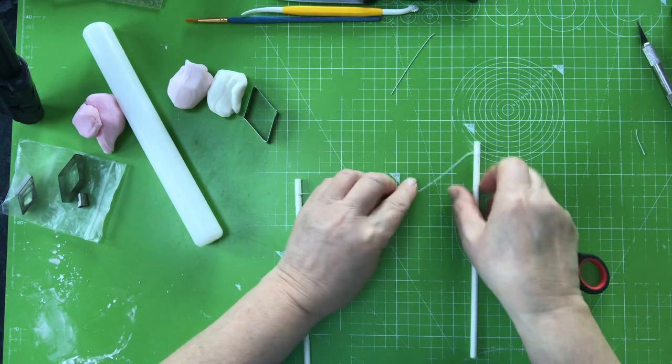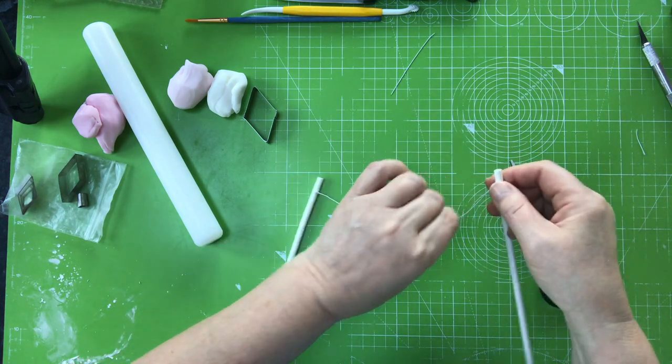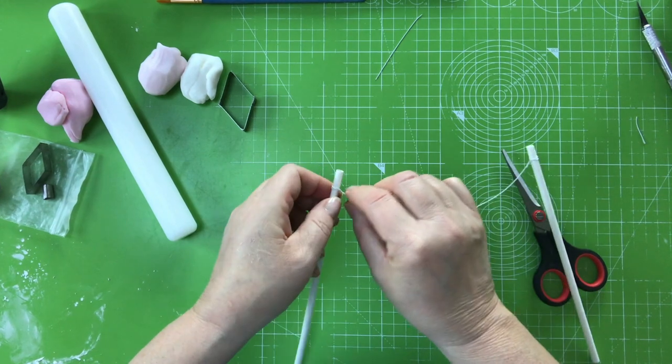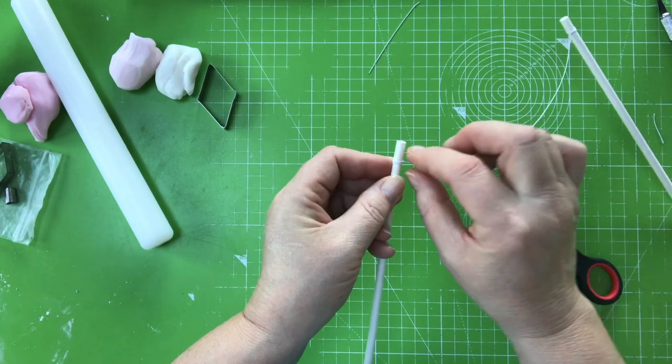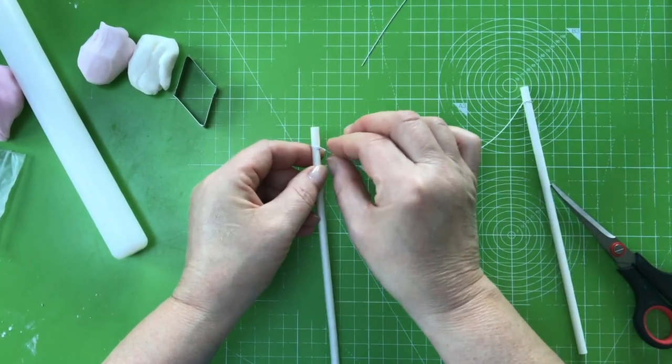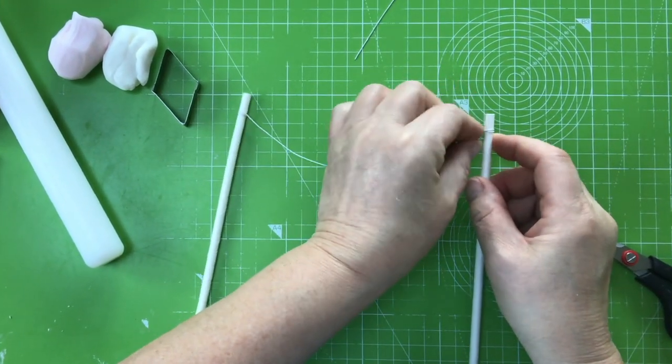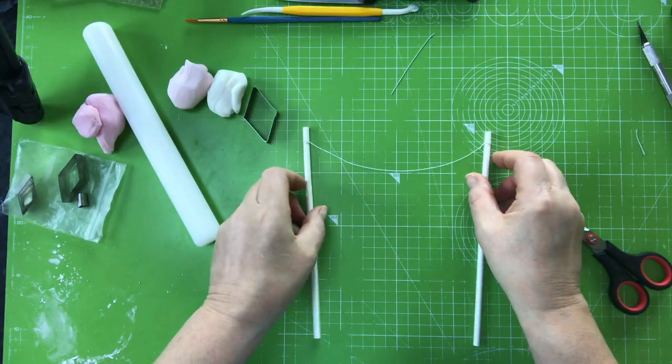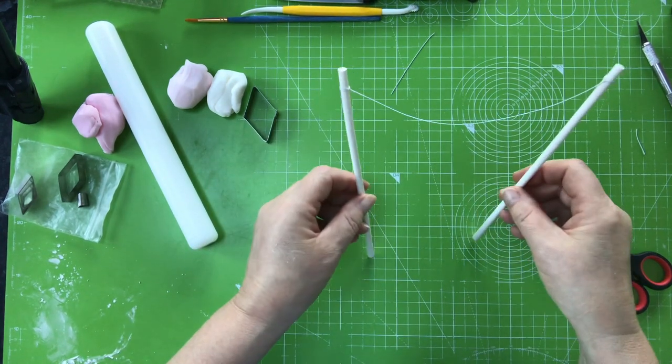Now you have the basis of your bunting and you want to make sure that it is pointing down as well. Don't keep it up like this because when it goes on the cake it's going to be like that, so you want to drop it down a little bit. Don't worry about this too much because your ribbon is going to cover this as well. You can always move this once you've got it on the cake anyway.